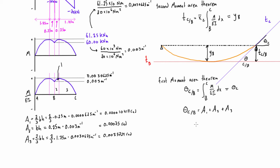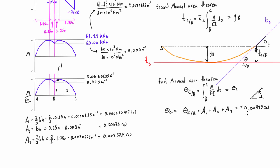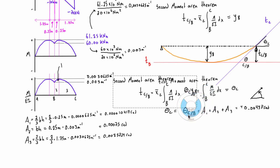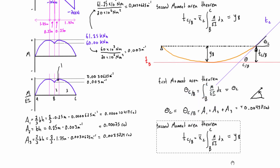Adding up all the areas gives a positive value of 0.00433 radians. The positive sign indicates an angle sweeping upward, which matches our geometry. Since the tangent at B is horizontal, theta_C with respect to B equals theta_C directly. Now for the second moment area theorem, we want the sum of all areas times the distance from their centroid to point C.